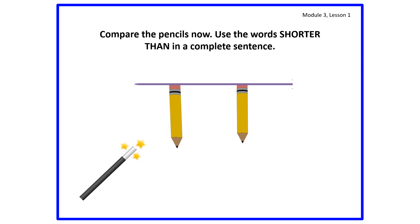I want you to compare the pencils again using the words 'shorter than' this time in a complete sentence. Please think about what 'shorter than' means. I think you're ready to compare the pencils again and use the words 'shorter than' in a complete sentence to describe these two pencils. Great job. It's my turn. I think that this pencil is shorter than this pencil.